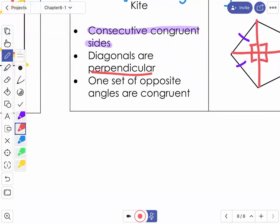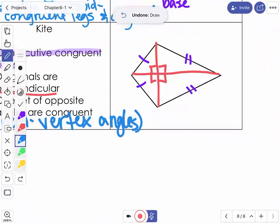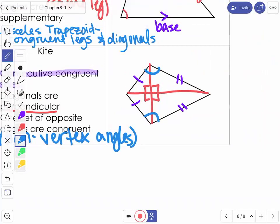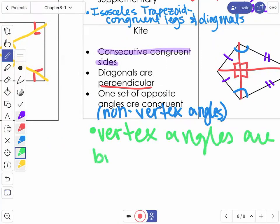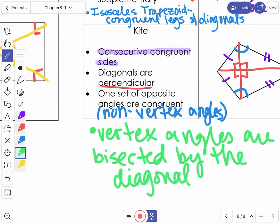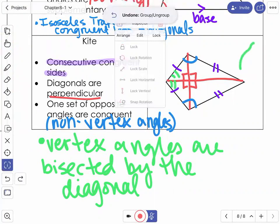So I get four nineties in the middle there. Once I have one set of opposite angles are congruent. Those are the non-vertex angles. Those are congruent. And one extra property. The vertex angles are bisected by the diagonal.